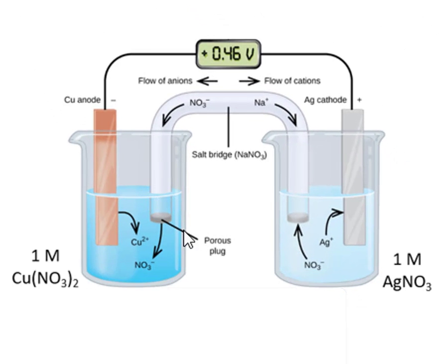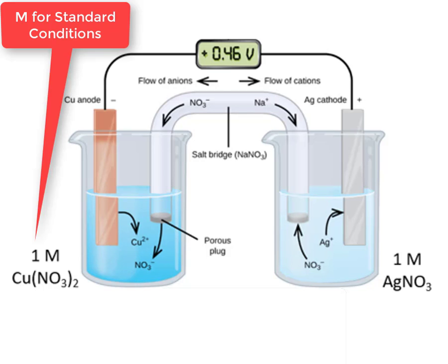So first, draw two beakers and place a salt bridge connecting them. Then in the left beaker, the anode, we draw the copper anode. And in solution, we represent one molar copper nitrate.